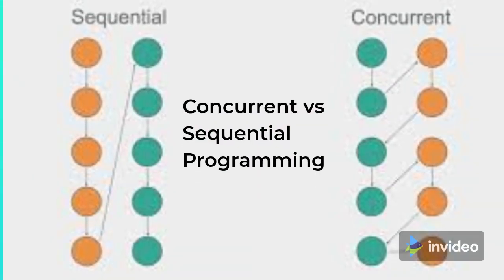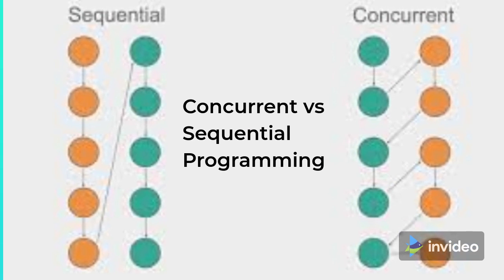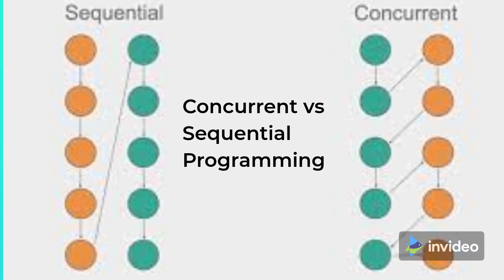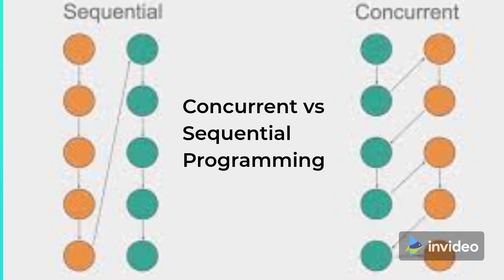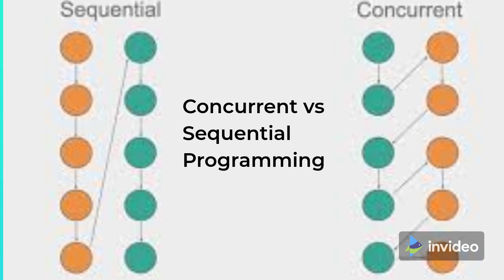Let's say we have two functions — one represented in orange color and one in green color — and both have multiple steps to execute. Let's say both functions have five steps, and we are executing all the steps of the orange function first and then all five steps of the green function. This is called sequential programming.